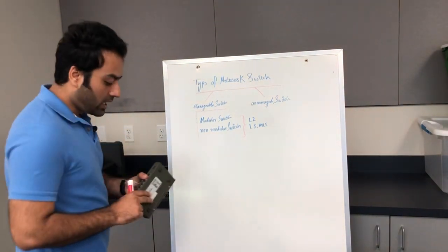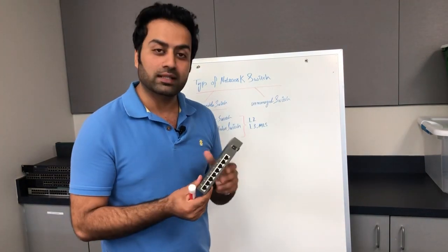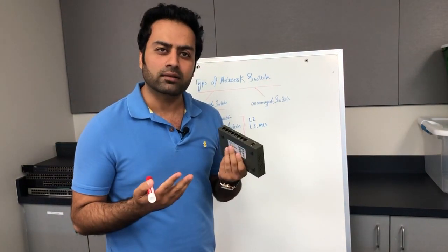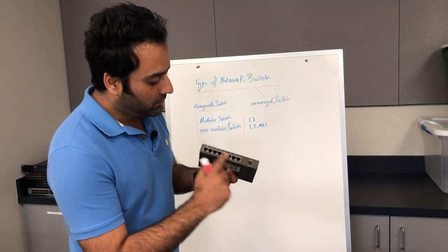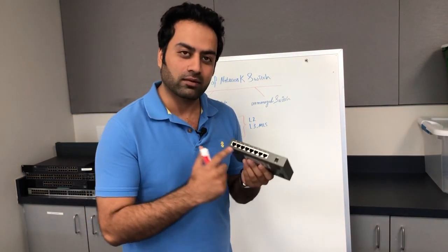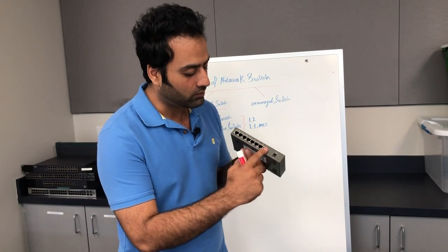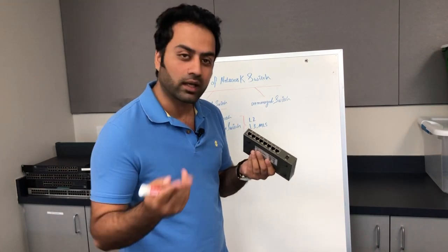Let me show you unmanageable switch. In here I have an example of unmanageable switch. How can we know which one is manageable and which one is unmanageable? By simply looking at the back or front of the switch.